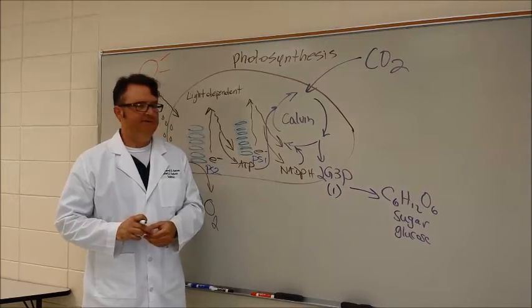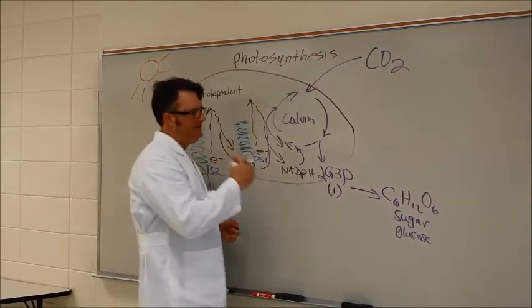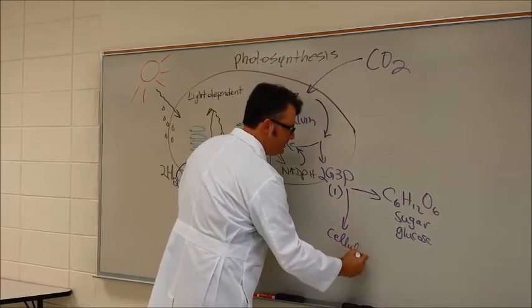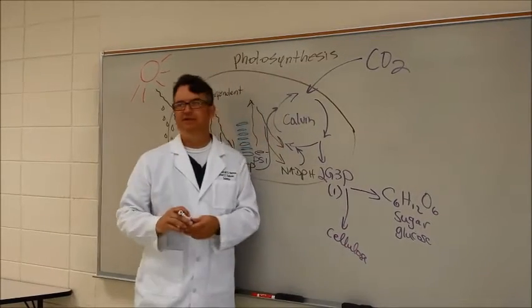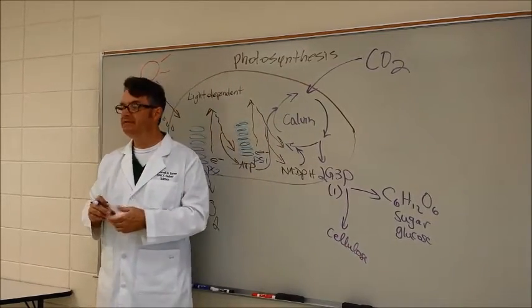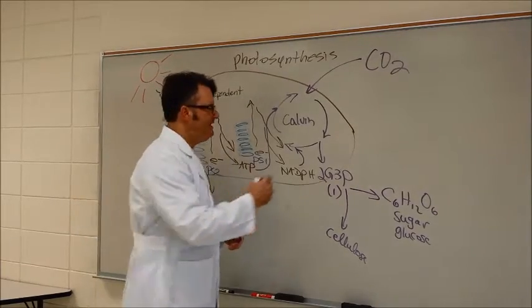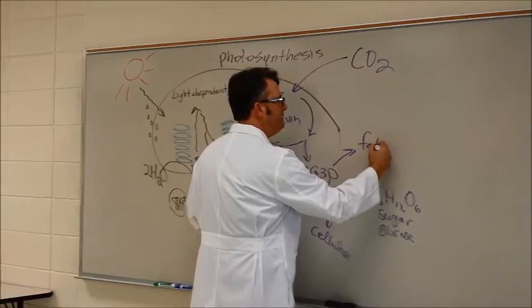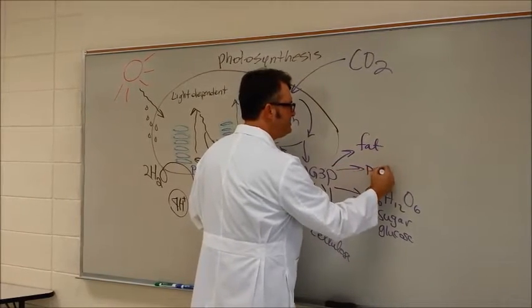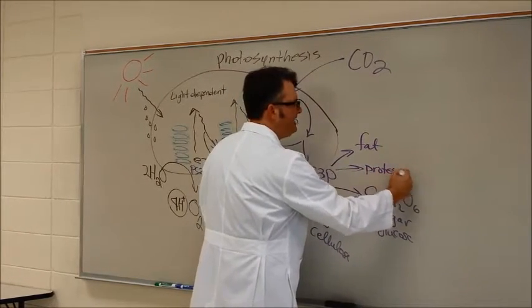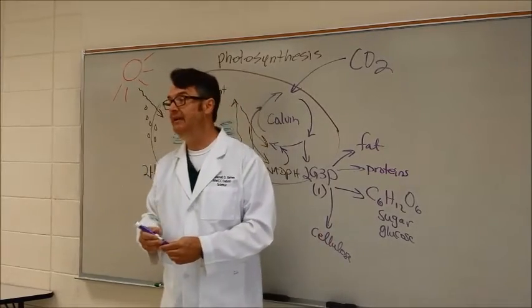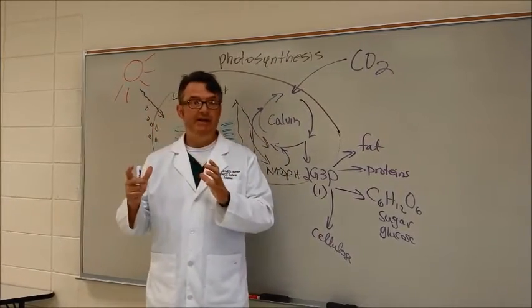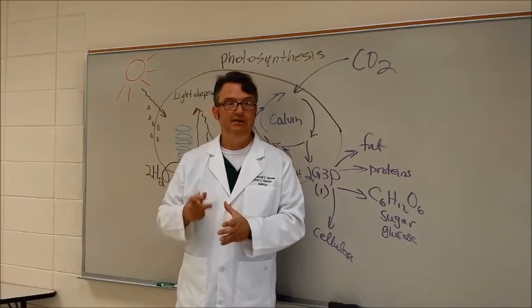The other interesting thing is that plants can make cellulose. Cellulose is the science word for wood. Plants can also make fat and they can also make proteins. My favorite fat from a plant - the other day I was at the house, got an avocado, chopped some onions,